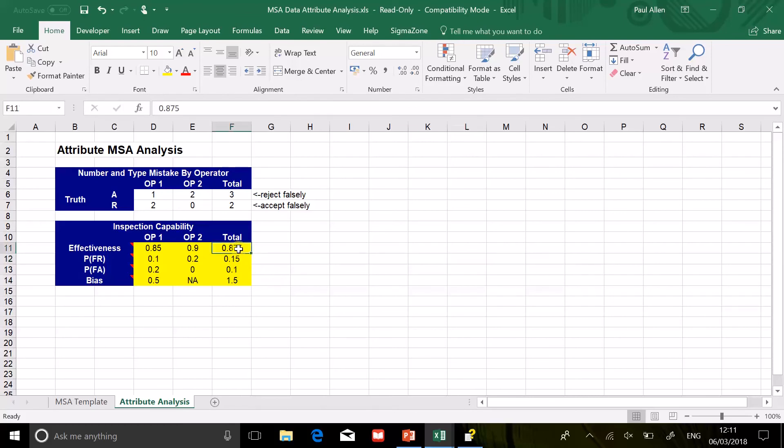So overall, we've got a good measurement system. 88.75 for effectiveness. Operator 2 is much better than operator 1. Operator 2, you'll notice, doesn't have any bias. That's because they didn't make any false acceptance mistakes. So of course, we can't divide by 0 in that case.